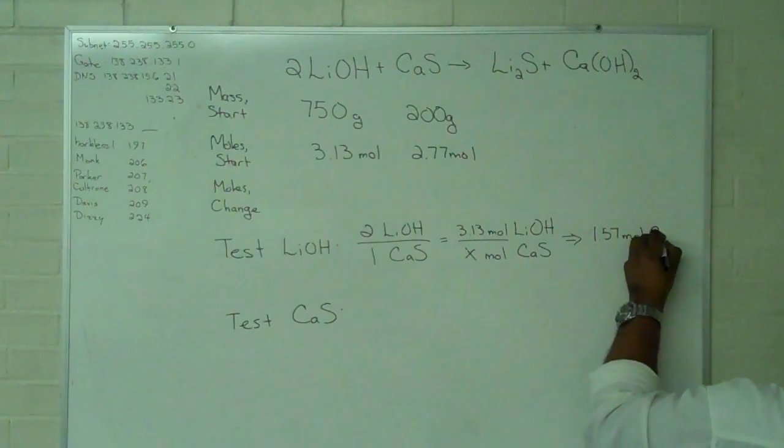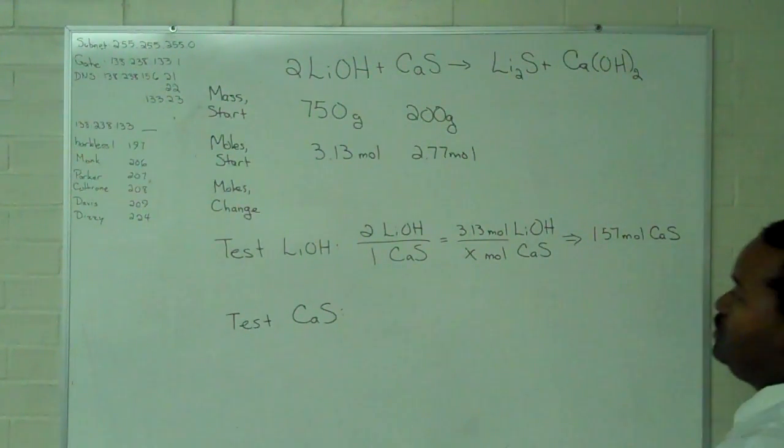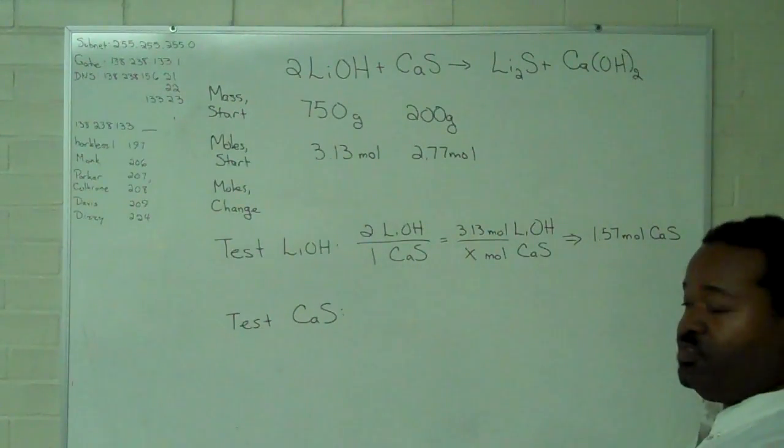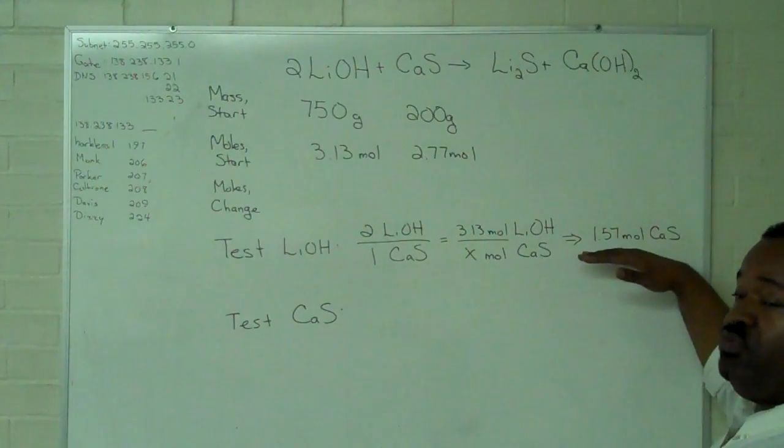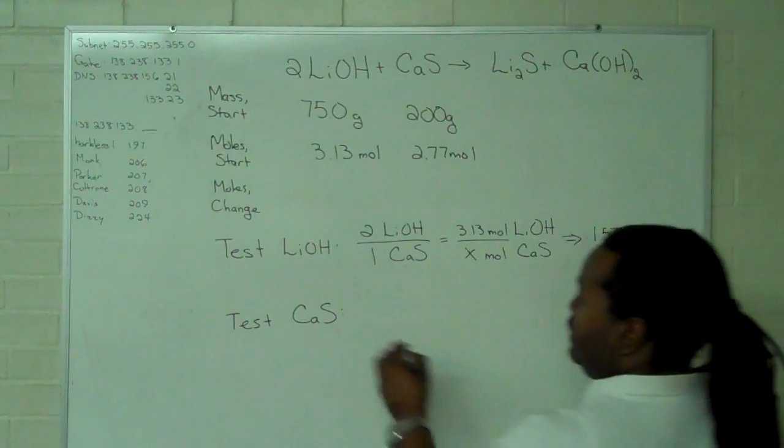And it turns out that when we multiply through our cross multiplication and solving for X, that we have a value of 1.57 moles of calcium sulfide.